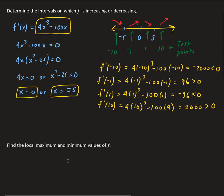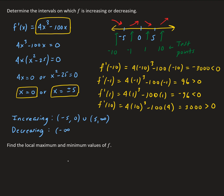Now we can summarize what we found. The function is increasing on the intervals from negative 5 to 0, and from 5 to infinity. It is decreasing from negative infinity to negative 5, and also from 0 to 5. When writing these intervals, always go from left to right.